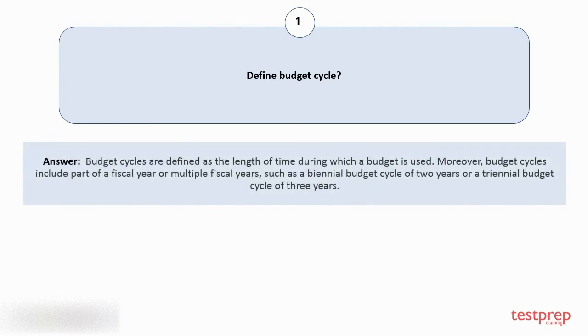Question number 1: Define budget cycle? Budget cycles are defined as the length of time during which a budget is used. Moreover, budget cycles include part of a fiscal year or multiple fiscal years, such as a biennial budget cycle of two years or a triennial budget cycle of three years.